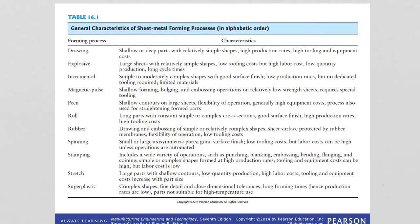There are many different sheet metal forming processes available. We will not cover all of them, but some of them and their characteristics are summarized in this table. We are going to learn about drawing, rubber sheet metal forming, spinning, stamping, and stretching. After you are done with the lecture you can come back to this table and read through the summaries and characteristics of each forming process.